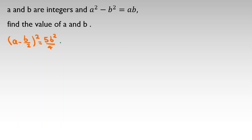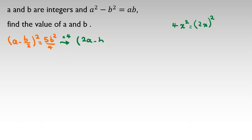Now I multiply both sides by four. When four goes inside the square, the expression becomes (2a minus b) squared. So we get (2a minus b) squared equals 5b squared.